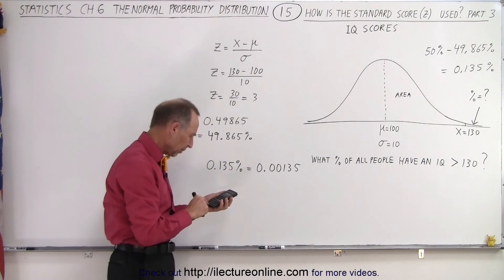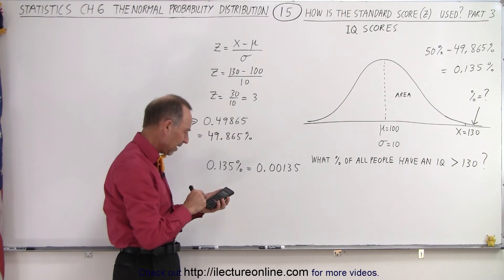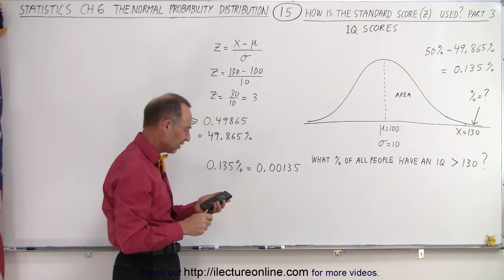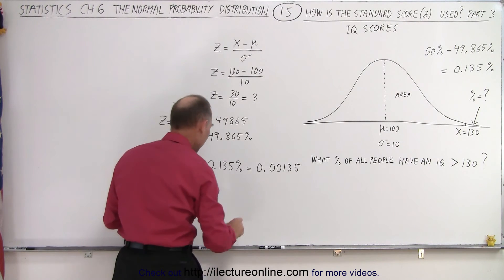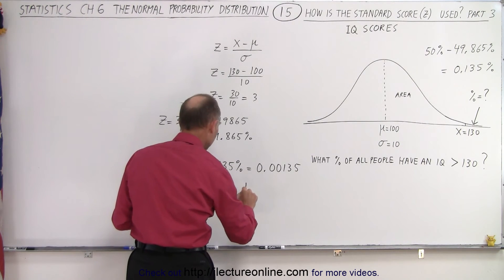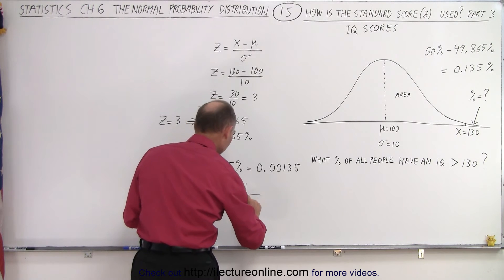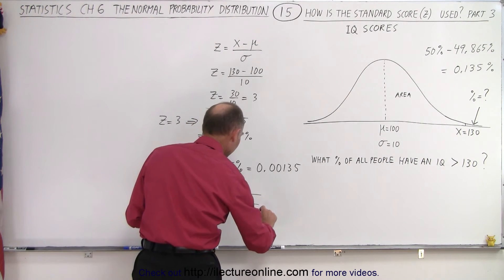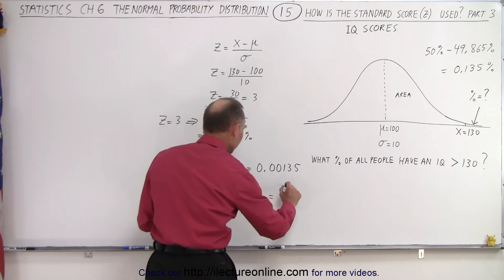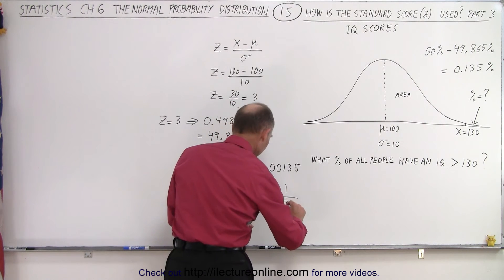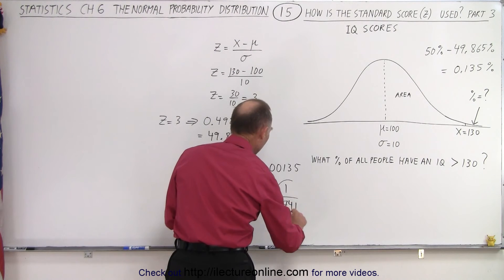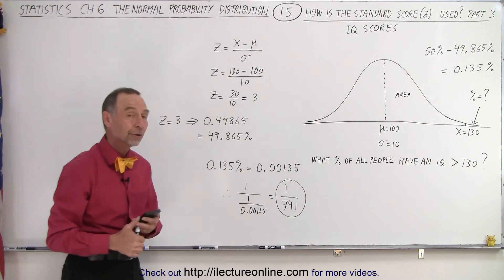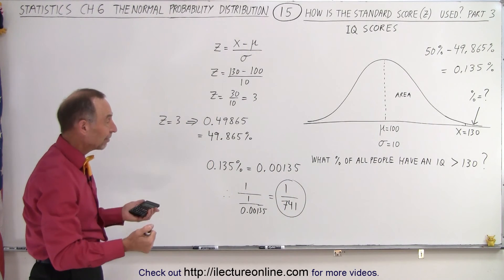So I plug in the number 0.00135. Then I take the inverse of that number. That means we have 1 divided by 0.00135, which means it's 1 out of 741 people have an IQ of 130 and above. And so that's how we